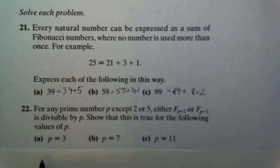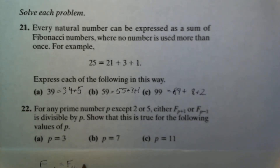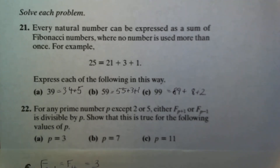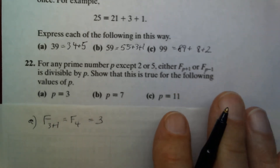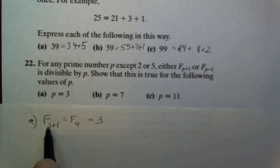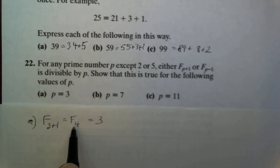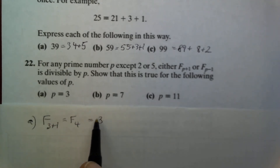For part A, with P equal to 3, we look at F sub (P plus 1), which is F sub 4. The fourth Fibonacci number is 3, and 3 is divisible by P equals 3.